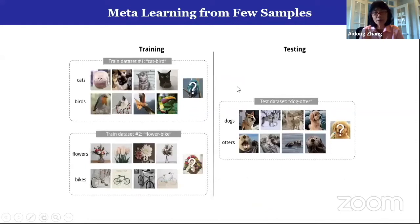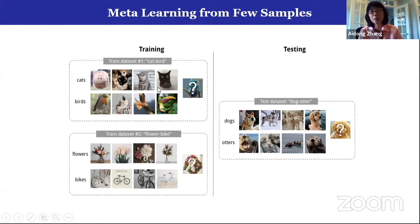In a more visible way, you have different tasks and each task is small. For example, the top-left one is called two-way four-shot — each task has only two different classes and each class has only four samples. Using these four samples plus a query or testing case, you train the model. You will have thousands of such small tasks and testing cases to train your model to adapt with the smallest number of samples.